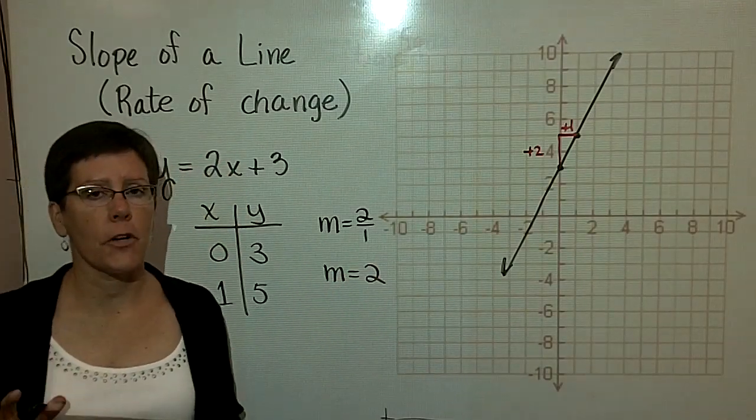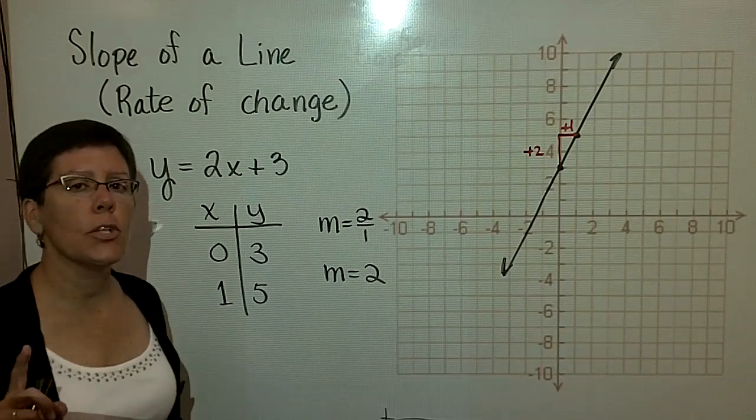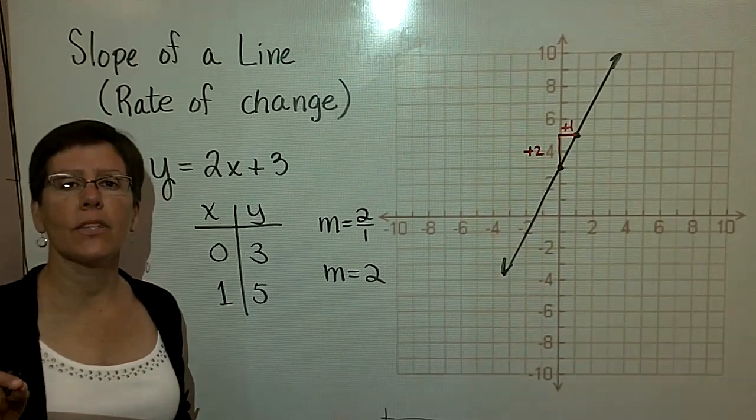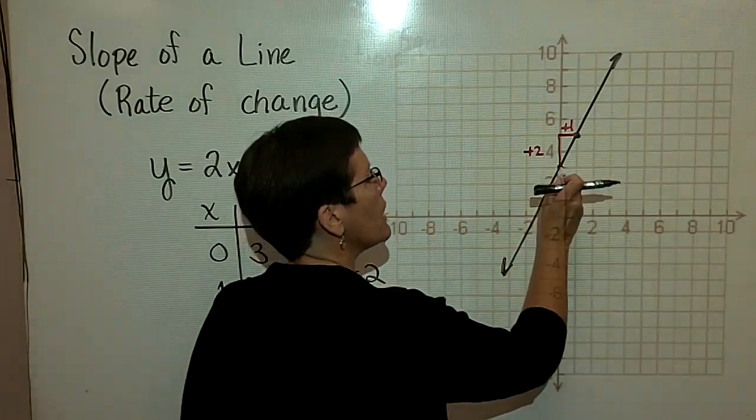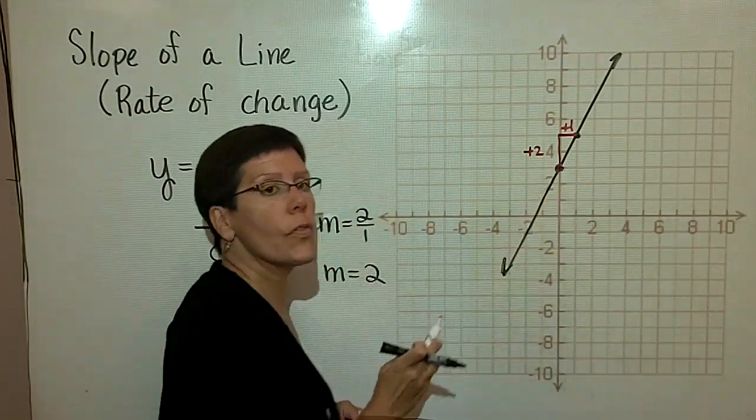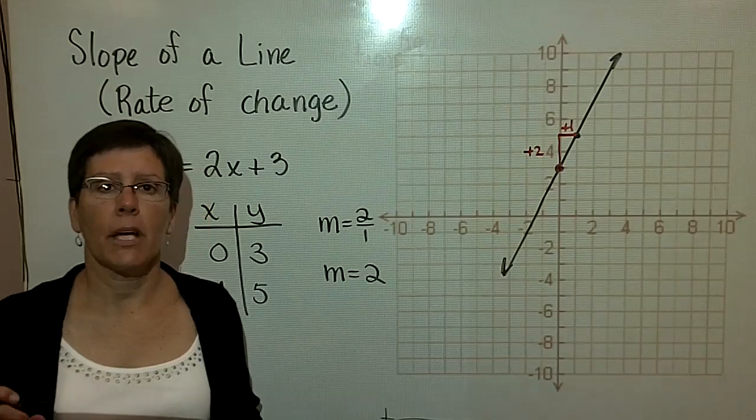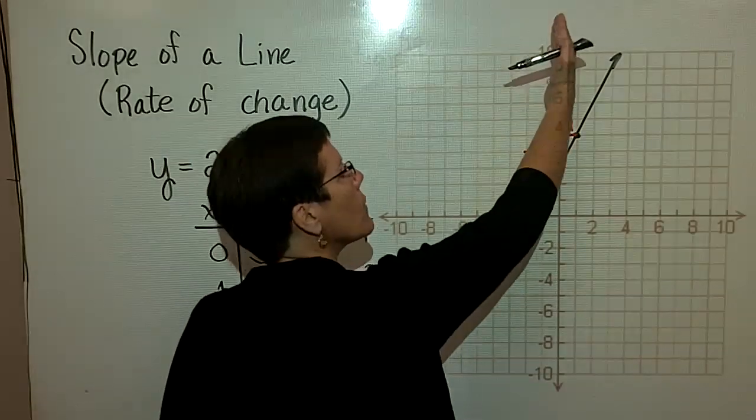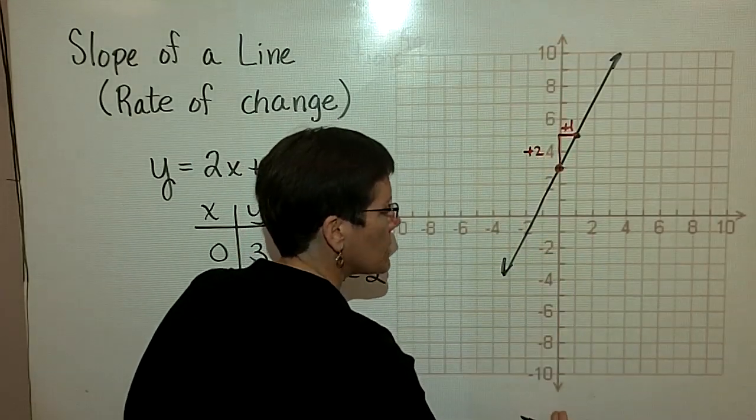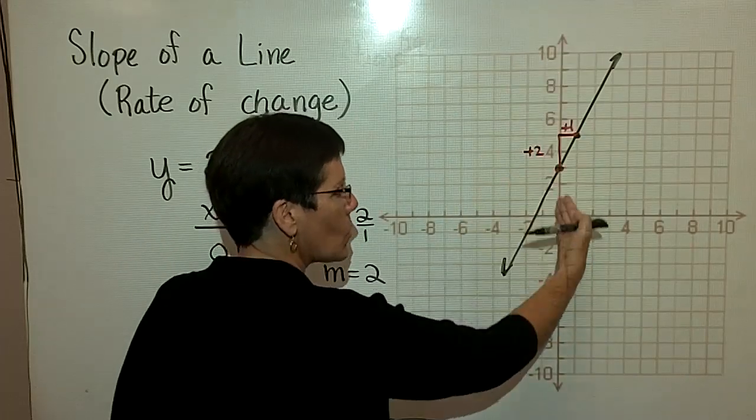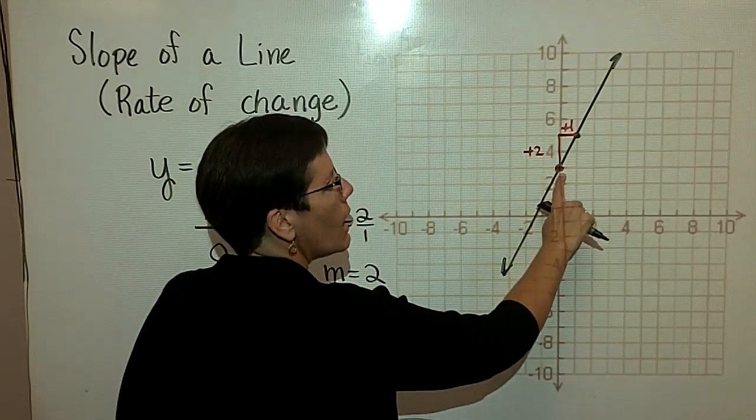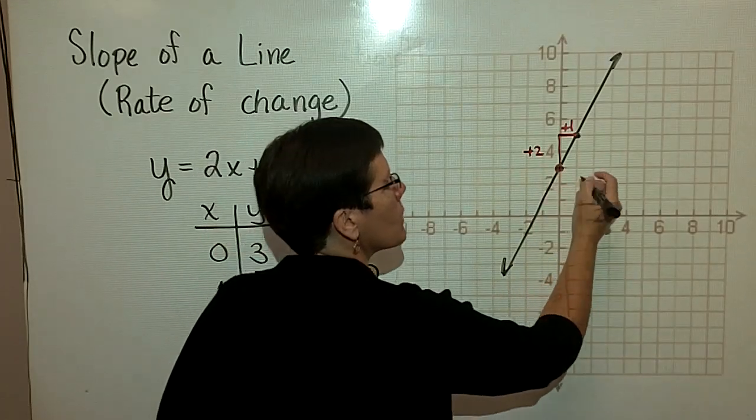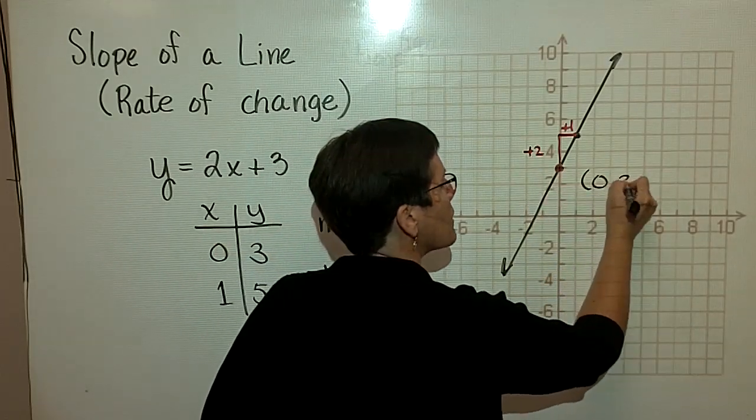And then I'd also like you to notice what's called the y-intercept on the graph of this line. This is the ordered pair that is called the y-intercept on any equation. It is where the graph of the line crosses the y-axis. Here's the y-axis and the graph crosses right there. For us, that ordered pair right there is (0,3).